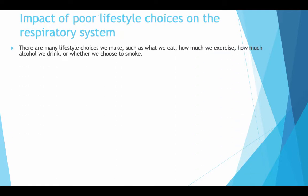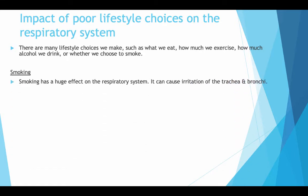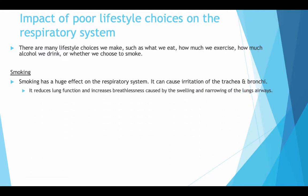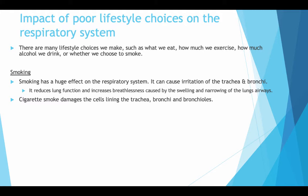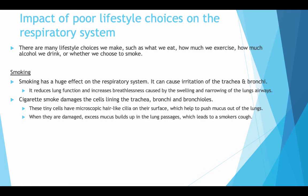Impact of poor lifestyle choices on the respiratory system: there are many lifestyle choices we make, such as what we eat, how we exercise, how much alcohol we drink, or whether we choose to smoke. Smoking has the biggest effect on the respiratory system. It can cause irritation of the trachea and bronchi, reduces lung function and increases breathlessness caused by swelling and narrowing of lung airways. Cigarette smoke damages the cell lining of the trachea, bronchi and bronchioles. These tiny cells have microscopic hair-like cilia on their surface which help to brush mucus out of the lungs. When damaged, excess mucus builds up in the lung passages, leading to a smoker's cough.